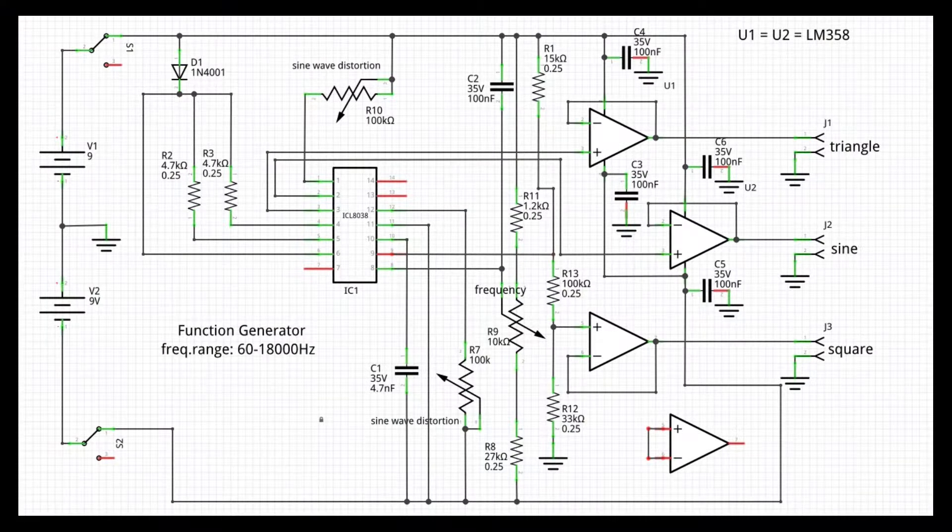In the circuit I am presenting today, instead, I have added such impedance adapters in the form of voltage followers built around these op-amps that you see on the right of the schematic. Moreover, my circuit allows a much larger range of frequencies than those kits, and is very stable between 60 Hz and 18,000 Hz, which is a range more than enough to test any kind of audio device you may build.